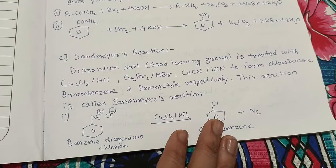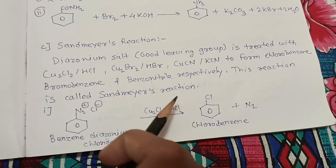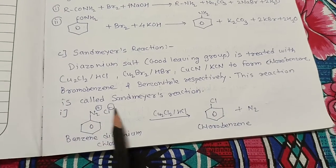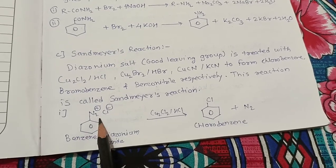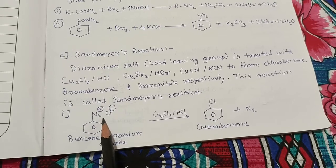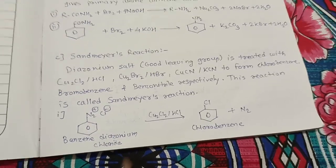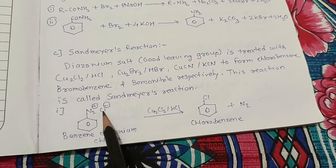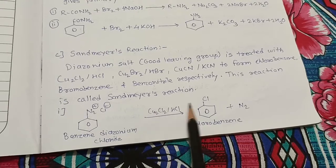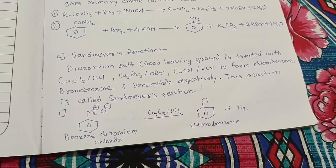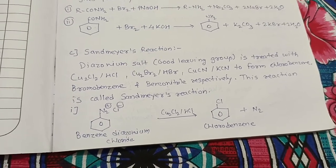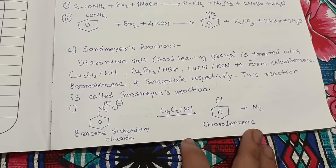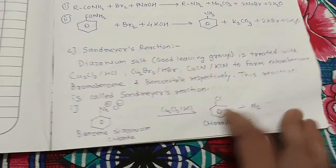If you want to convert aniline into chlorobenzene, bromobenzene, or benzonitrile, we use Sandmeyer's reaction. Aniline is first converted into benzene diazonium chloride using NaNO₂ and HCl at 0–5°C. The diazonium salt is a good leaving group — aniline is a bad leaving group — so it is converted to a good leaving group, and then chlorine is easily substituted to give chlorobenzene.